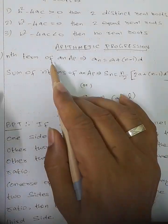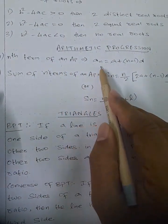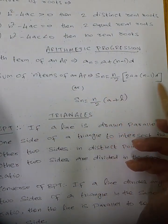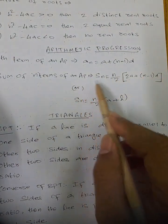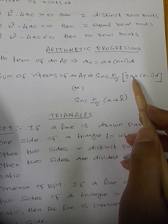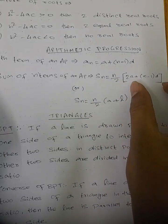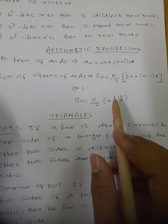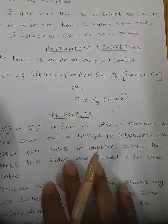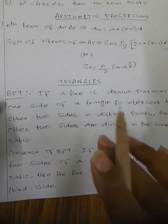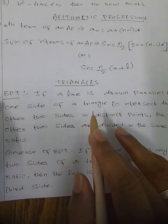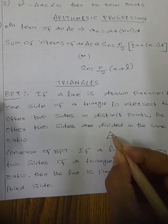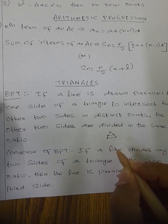Now, arithmetic progressions. The nth term of an AP: a_n equals a plus (n minus 1) into d. The sum of n terms: S_n equals n by 2 into (2a plus (n minus 1) into d), or equivalently S_n equals n by 2 into (a plus the last term).